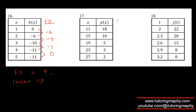For the next table, the first differences are −8, −3, −2, −1 — the numbers are increasing. Since the first difference is increasing, this function is also concave up.